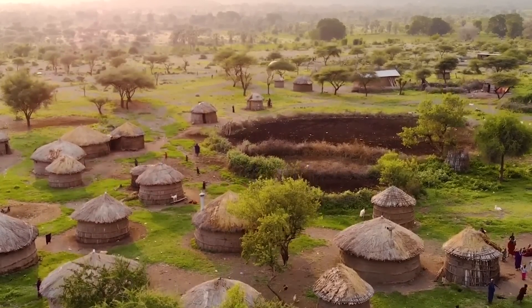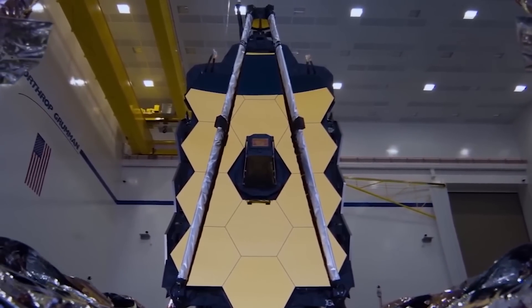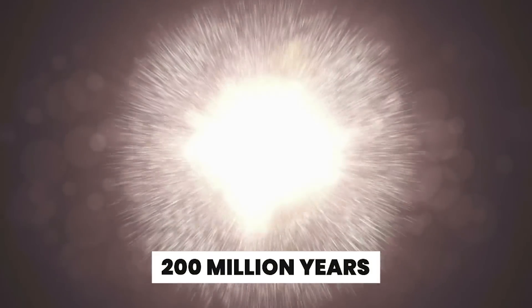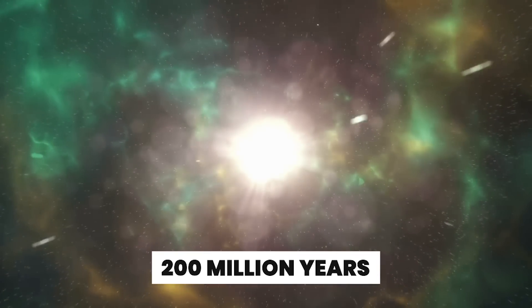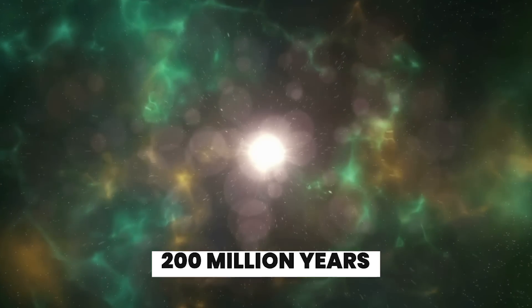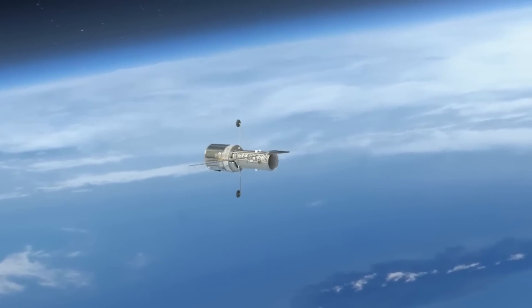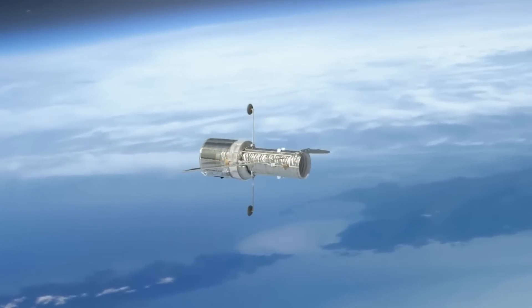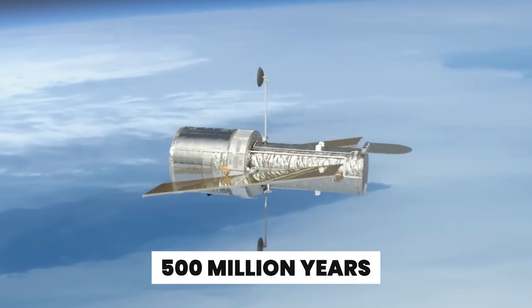Now back to our topic. James Webb Space Telescope can look back into the time, courtesy of background radiation, until 200 million years after the Big Bang. This is a significant improvement from the Hubble Space Telescope, which had the maximum efficiency of 500 million years after the Big Bang.